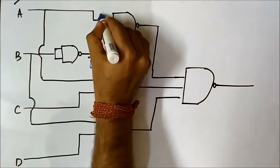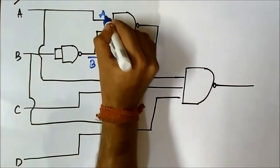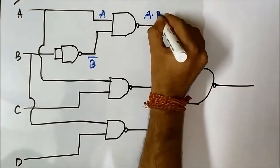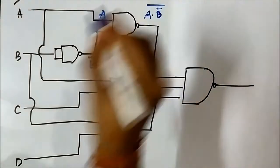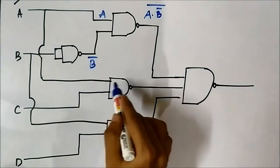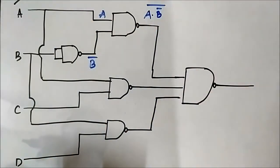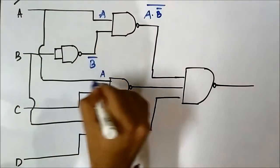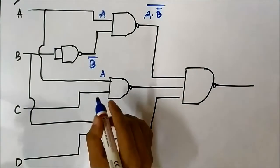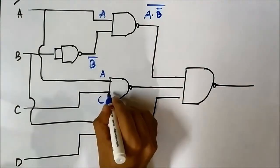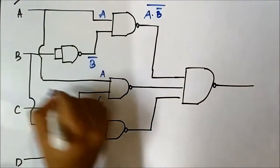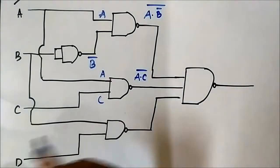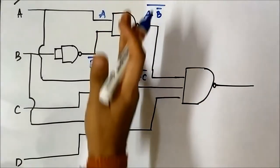This first NAND gate in the second layer has inputs A and A — and B complement — giving the output (A · B complement) whole complement. The second NAND gate of the second layer has inputs A and C, so the output would be (A · C) whole complement.